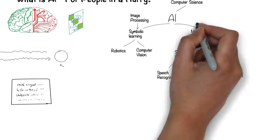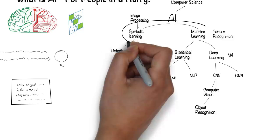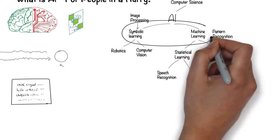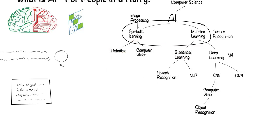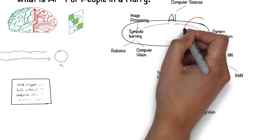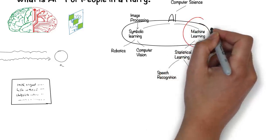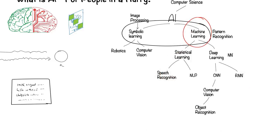There are two ways AI works. One is symbolic-based, and another is data-based. For the data-based side, called machine learning, we need to feed the machine lots of data before it can learn.